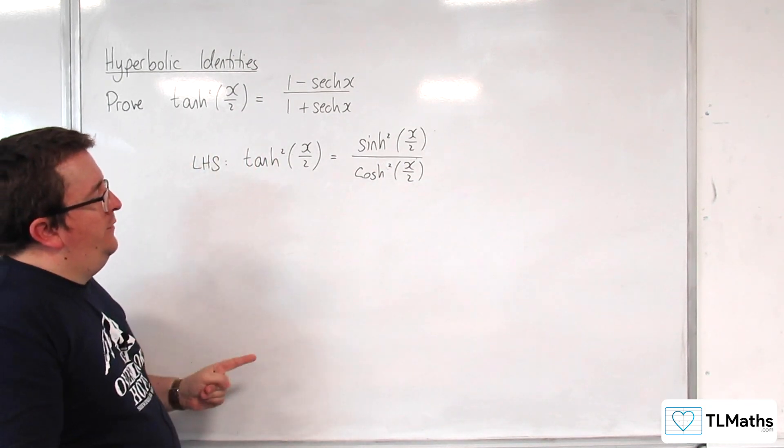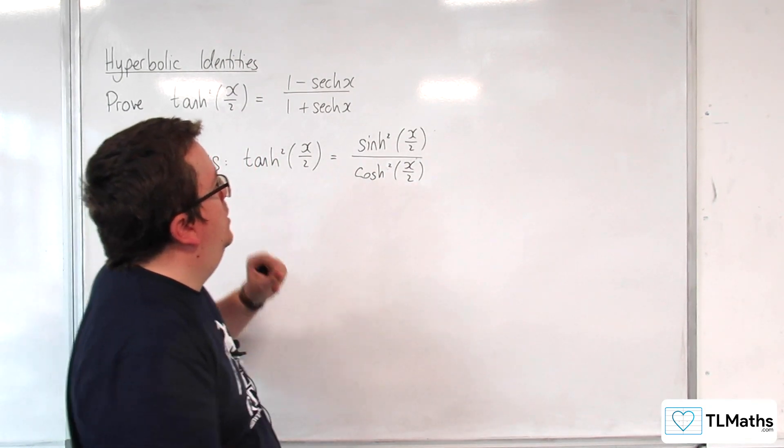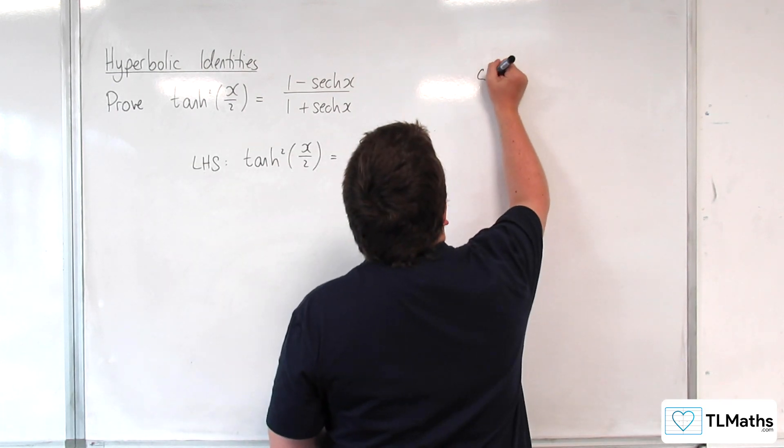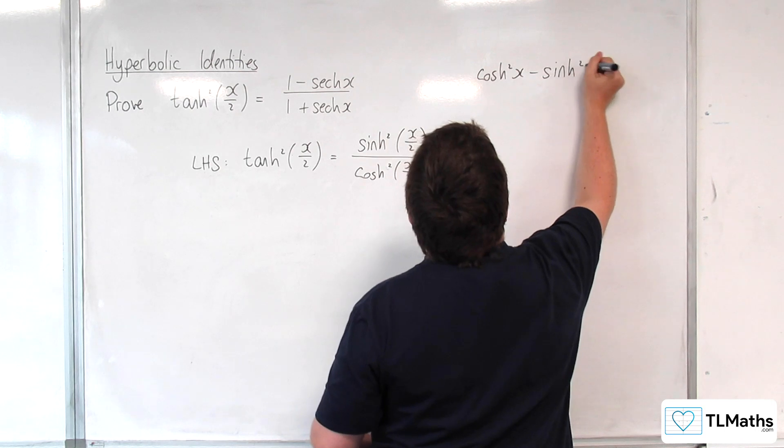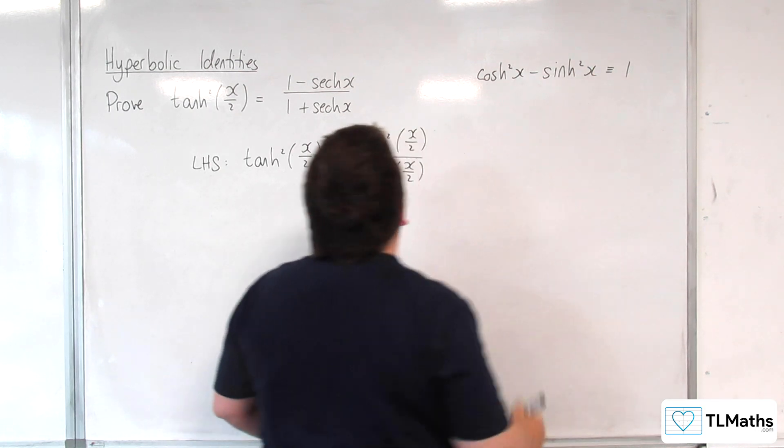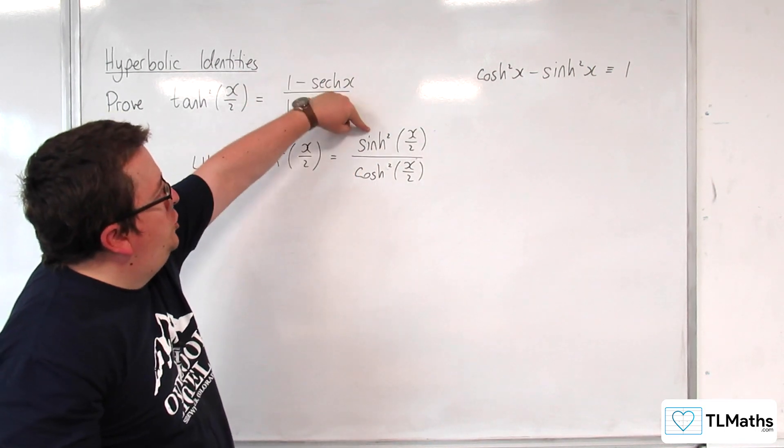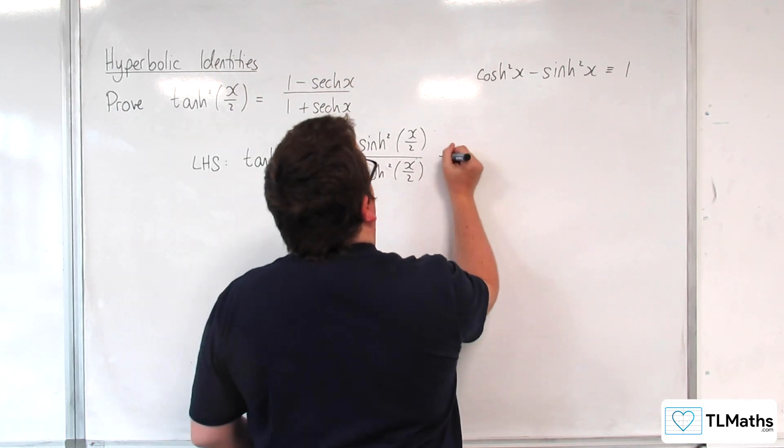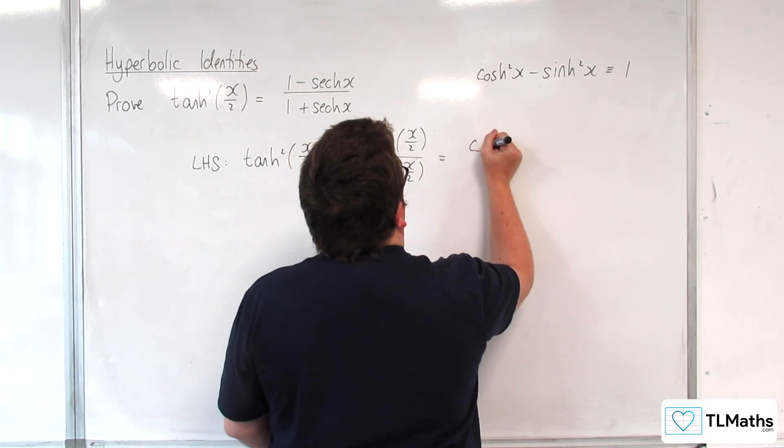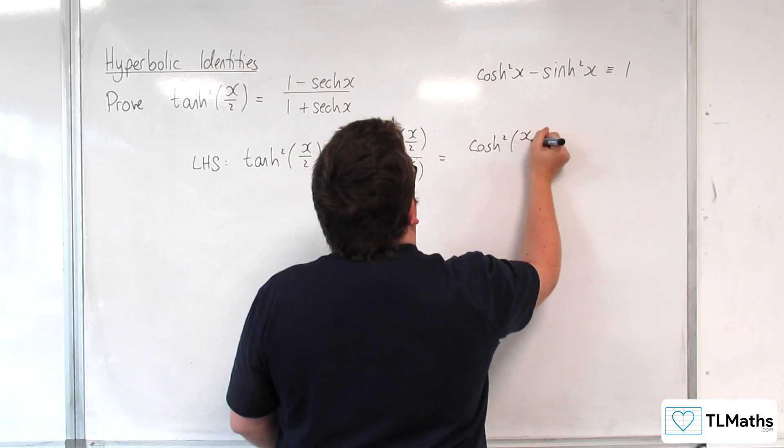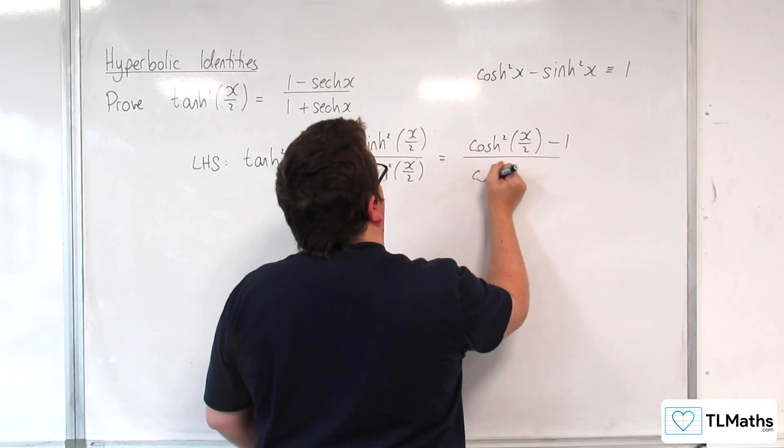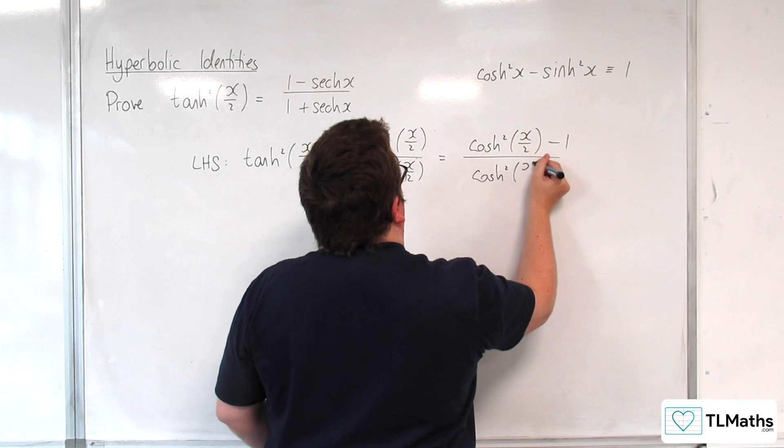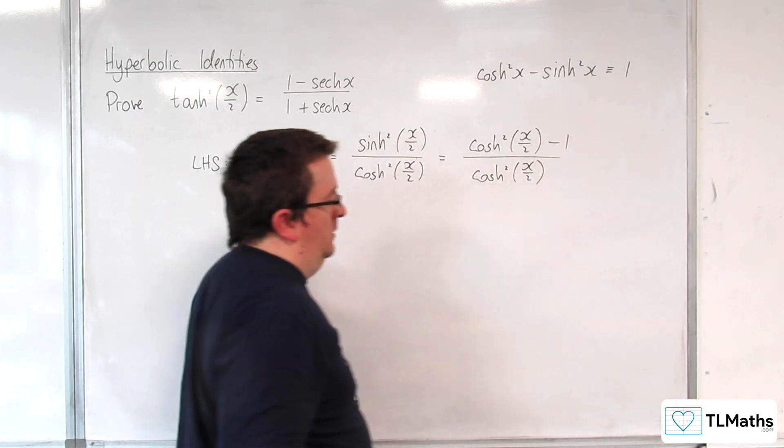Now, what I'm going to do is use that cosh squared x take away sinh squared x is equivalent to 1. So, I can replace the sinh squared with cosh squared x over 2 take away 1.